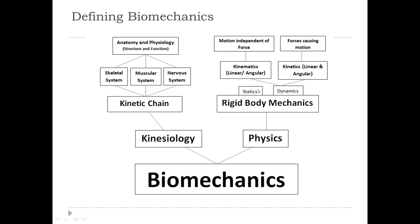Within rigid body mechanics we have statics — non-moving items — versus dynamics, because everything is moving. Within dynamics is kinematics, which includes linear and angular kinematics, having to do with motion independent of the forces causing it. On the other side we have kinetics — linear and angular kinetics — which are the forces causing motion. Combined together, all the different types of motions make up general motion, which is what human beings do.